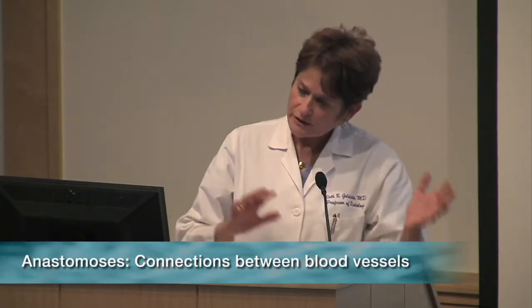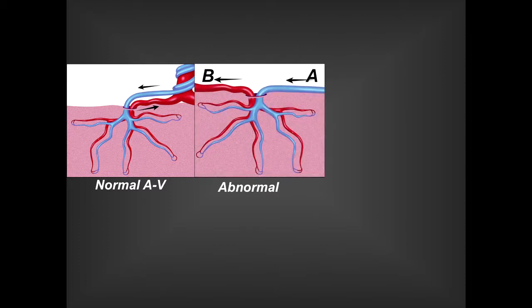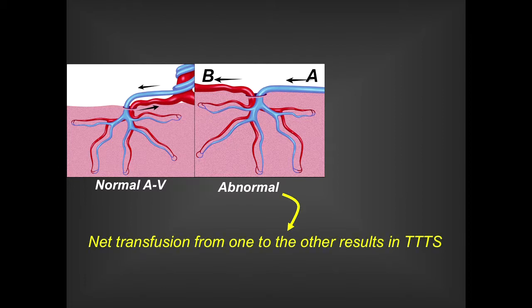The vascular anatomy was not very clearly elucidated for many years until a pathologist at Kaiser named Jeff Machen looked very carefully at the anastomoses and correlated them with outcomes. It became clear that the anastomoses in question were largely deep anastomoses. You can schematically draw normal cotyledonary flow as an artery going into the cotyledon, mixing with maternal blood, and a vein going back to the same twin. But in many cases, the artery goes into the cotyledon and the vein goes to the other twin, resulting in a net transfusion through this placental AV communication.